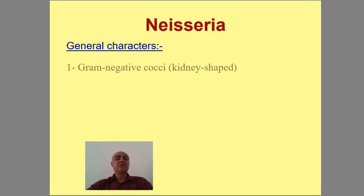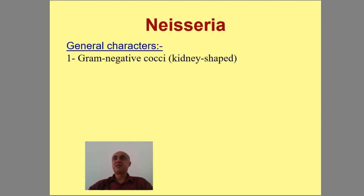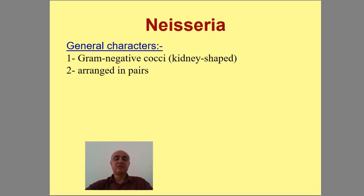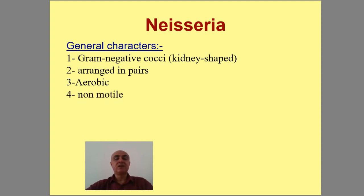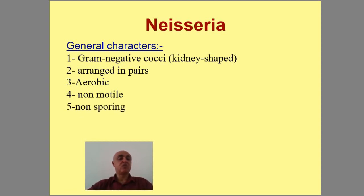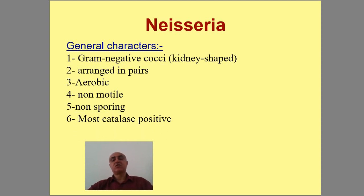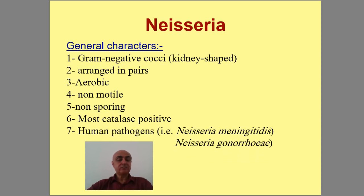We will discuss gram negative cocci. What are Neisseria meningitidis and Neisseria gonorrhoeae? We will try to cover the important characteristics of these bacteria. The cancer antigen reference here relates to virulence — these are very important pathogens.